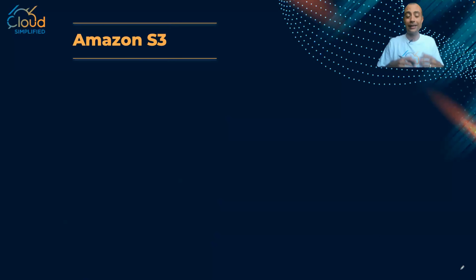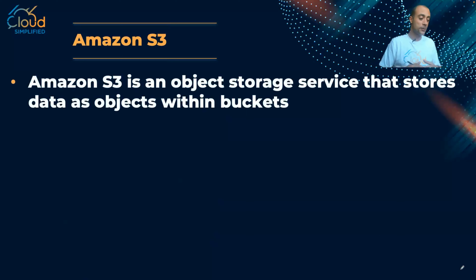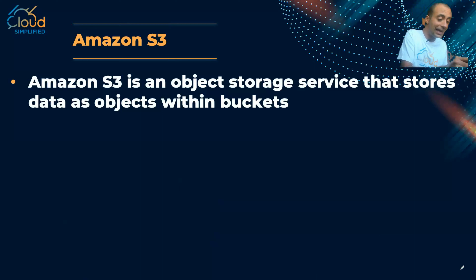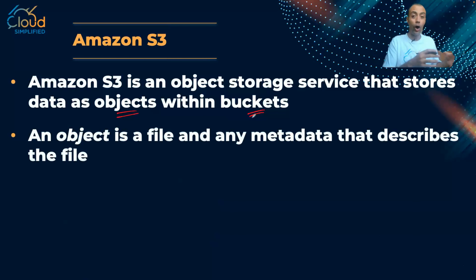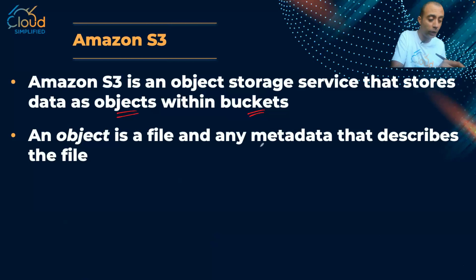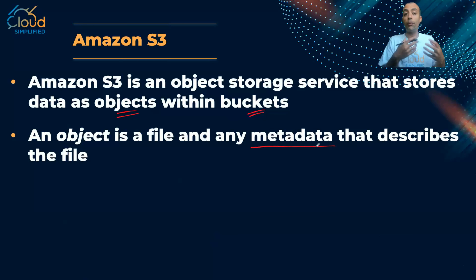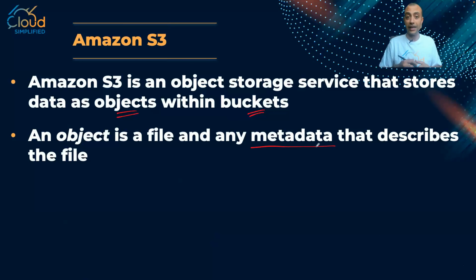S3 is an object storage service that stores data as objects, and these objects are stored inside something called buckets. You can think of buckets as folders. An object is simply the file that you have, and every file has what we call metadata — meaning information about the data — which includes the file name, file type, and file size.